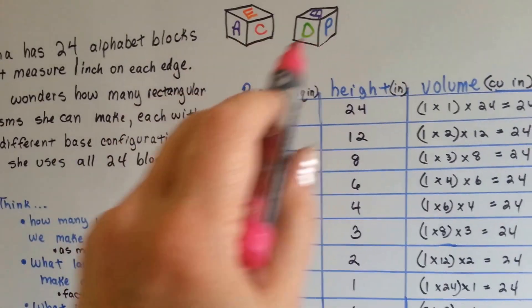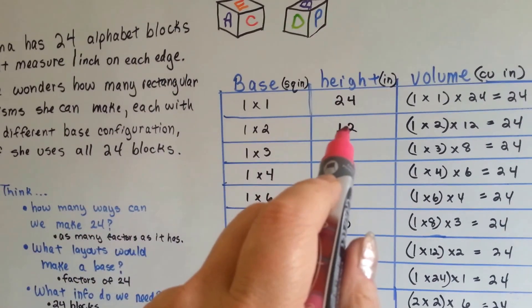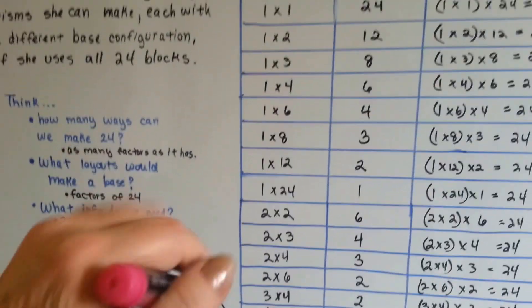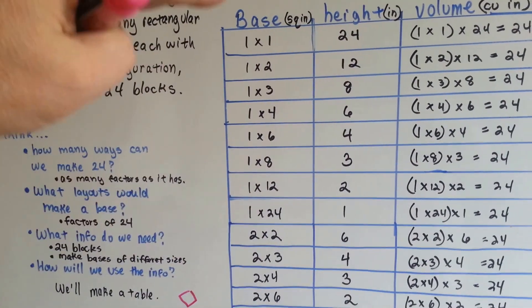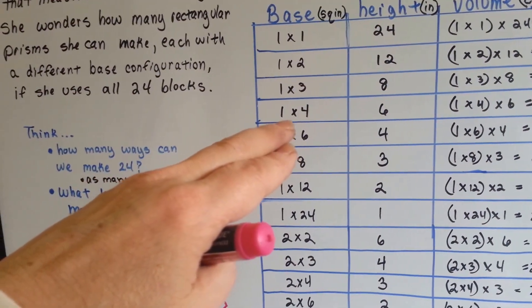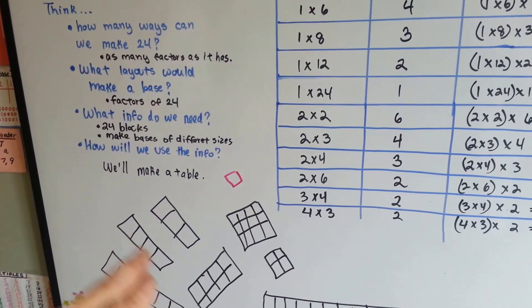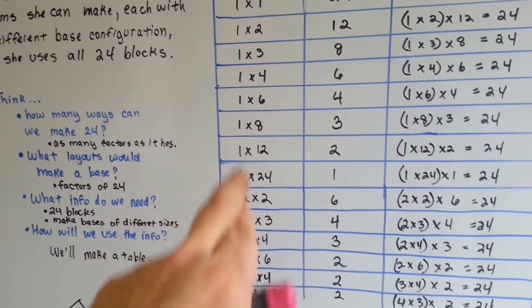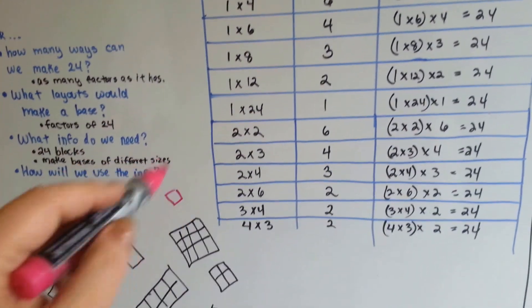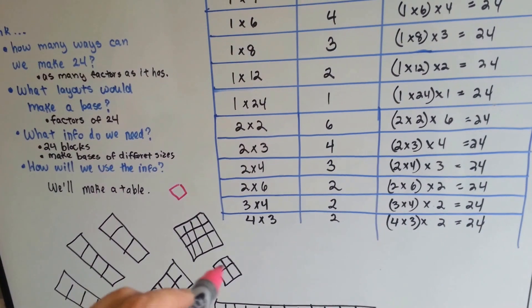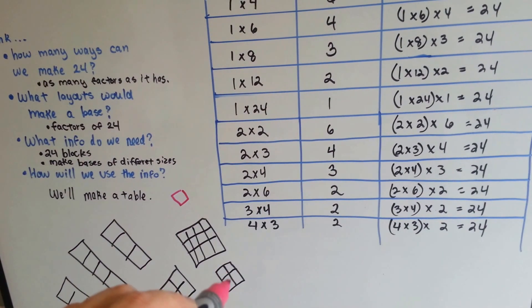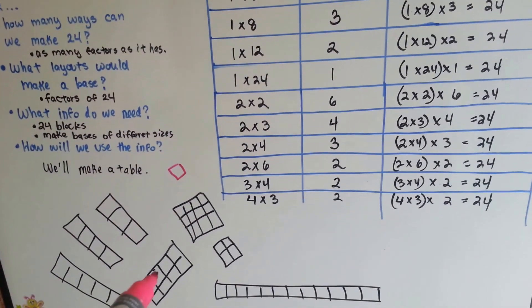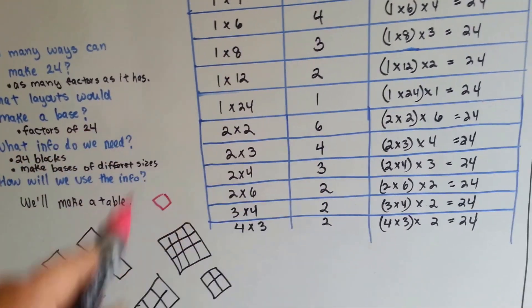She could also do two blocks next to each other and stack them 12 high, or do three blocks in a row like this and stack them eight high to use all 24 blocks. And she keeps playing with all the different ways. She could do two and two and stack them six high to use all 24 blocks or four times three or two times six. And she figures out all the different configurations.